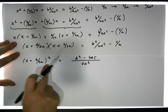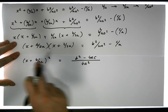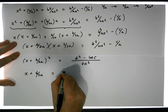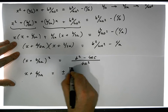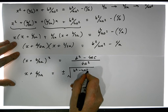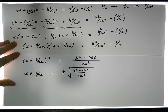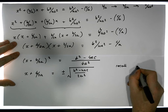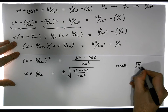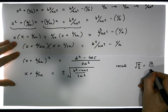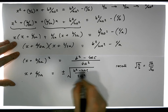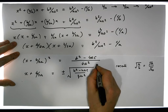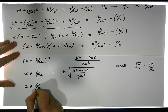The square of this term equals this expression, so we take the square root of both sides. We get x + b/2a equals plus or minus the square root of (b squared minus 4ac) over 4a squared. Recall that the square root of a over b is the same as the square root of a divided by the square root of b, so we can take the root of the numerator and the root of the denominator separately.